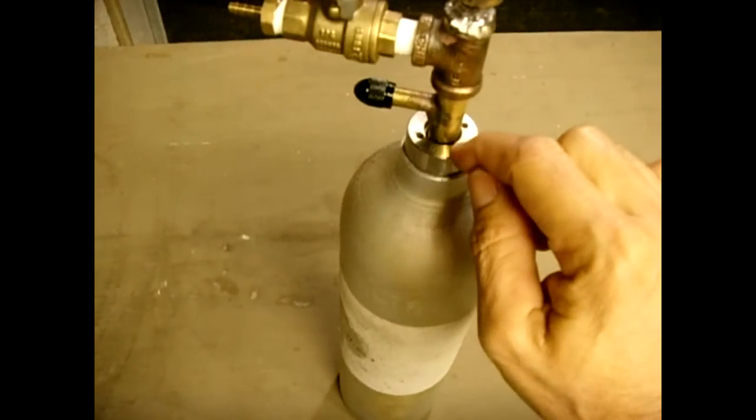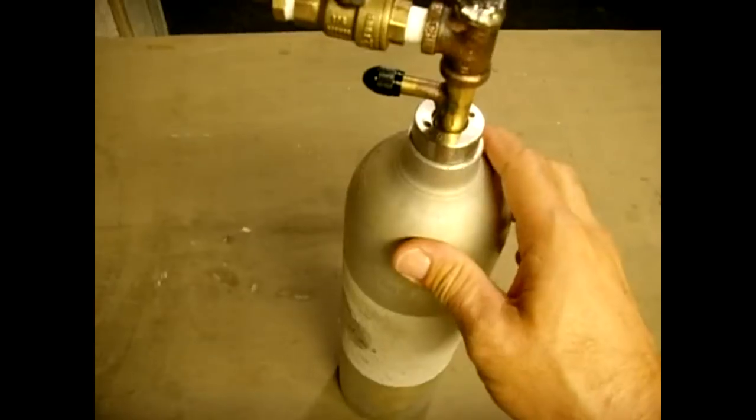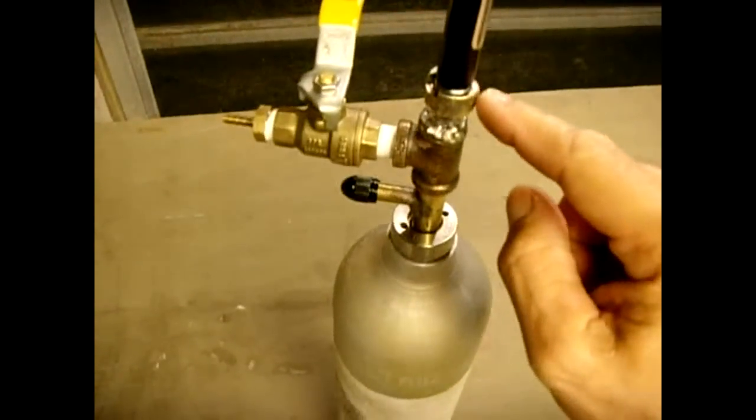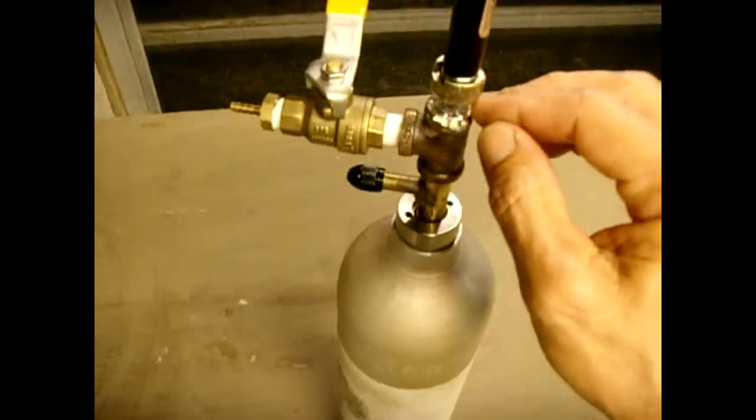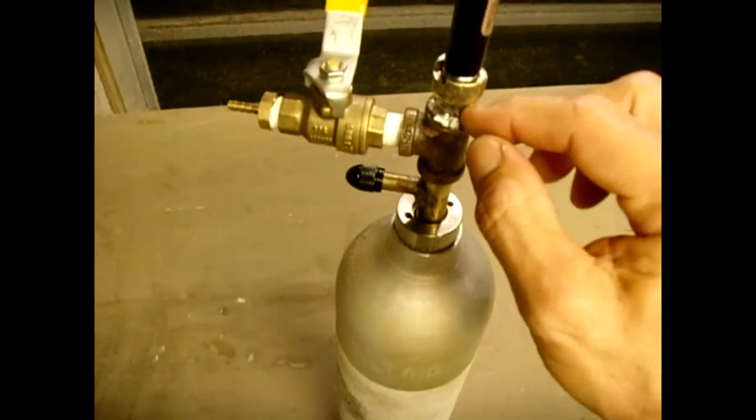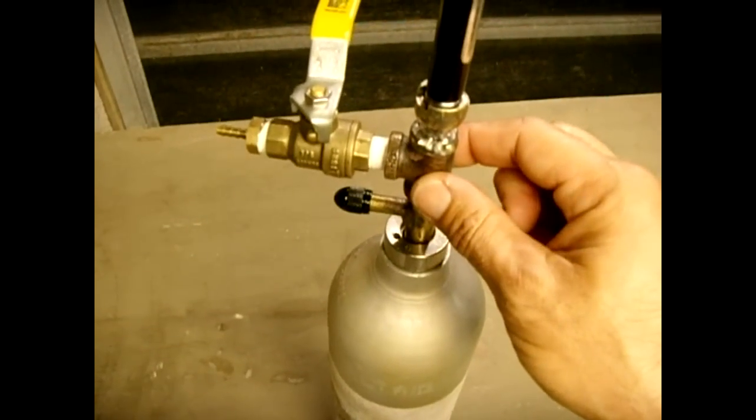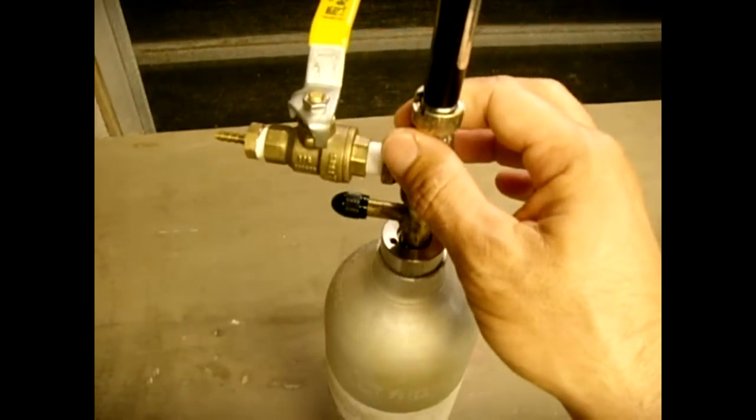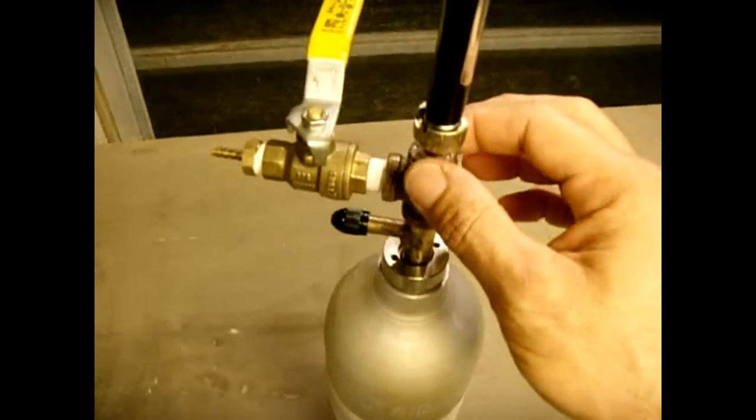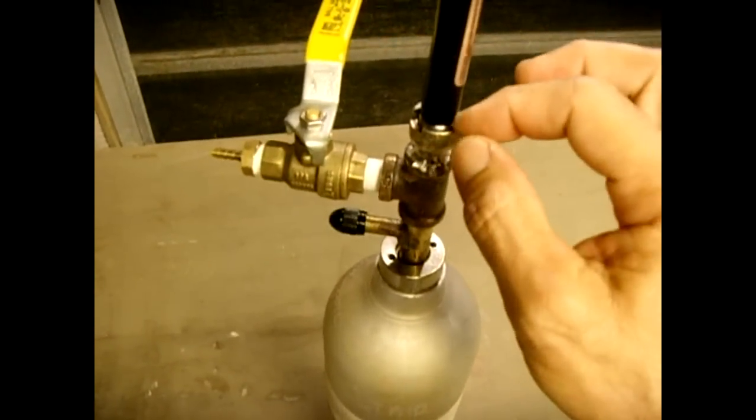So that is the setup. This threads in nicely. Inside here there was a metric thread, so what I did is I drilled it out and I tapped it with a quarter-inch pipe tap. On this part here from the spear gun, which is brass with a plating over it, I ground down the 10 millimeter threads just enough that I can get it to go inside the quarter-inch tee. Once it was inside the quarter-inch tee, I then brazed this together all the way around.